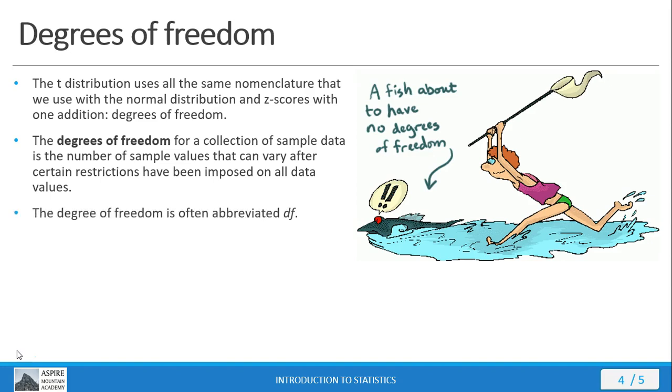Degrees of freedom means that you're just taking one less than the sample size. Often we abbreviate the degrees of freedom with df. And for the t-distribution, all we're doing is taking one less than the sample size, and that's degrees of freedom. So if you don't completely understand this mathematical definition for degrees of freedom, it's really important that you get this definition down, that the degrees of freedom for your t-distribution is going to be one less than the sample size.